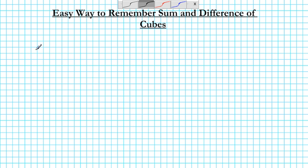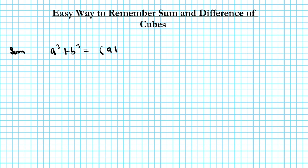For the sum of cubes, we have a³ + b³, and the factored form is (a + b) times: square the first term, minus the product of both, plus the square of the last. So you have a plus b, then a², then ab in the center, then b².